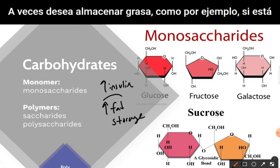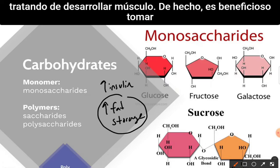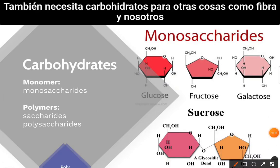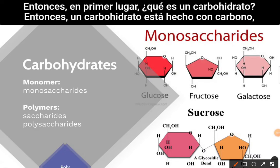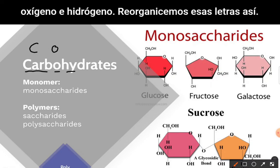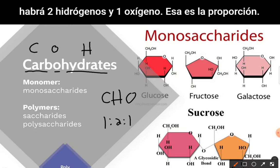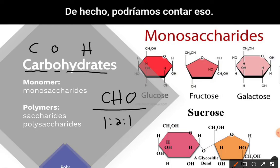But here's the thing — sometimes you want fat storage. For example, if you're trying to build muscle, it's actually beneficial to take a little bit of carbohydrates after a workout. Carbs aren't all bad; you also need carbs for things like fiber. But first, what is a carb? A carb is made with carbon, oxygen, and hydrogen — rearranged as CHO. For every one carbon, there are two hydrogens and one oxygen.